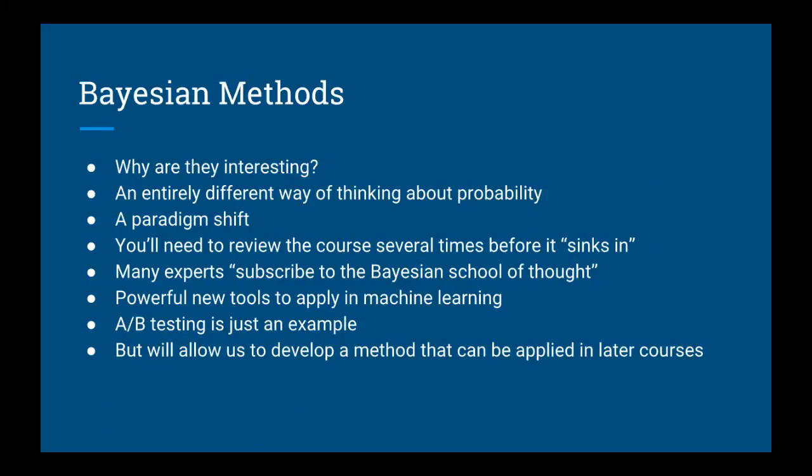So why is the Bayesian method interesting to us in machine learning? Well, it's an entirely different way of thinking about probability. It's a paradigm shift, and you'll probably need to come back to this course several times before it's fully sunk in. It's also powerful, and many machine learning experts often make statements about how they subscribe to the Bayesian school of thought. In sum, it's going to give us a lot of powerful new tools that we can use in machine learning.